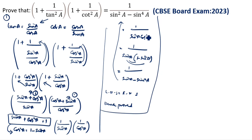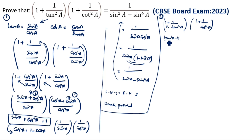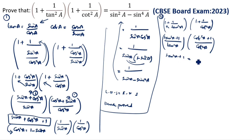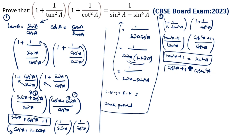This is the first method. Now we will see the second method. 1 plus 1 by tan square A, divided by 1 plus 1 by cos square A. So cross this one: tan square A plus 1 divided by cos square A. Tan square A plus 1 is equal to secant square A — this is the formula. In this you can apply this formula. So tan square A plus 1 is equal to secant square A, giving secant square A divided by tan square A.